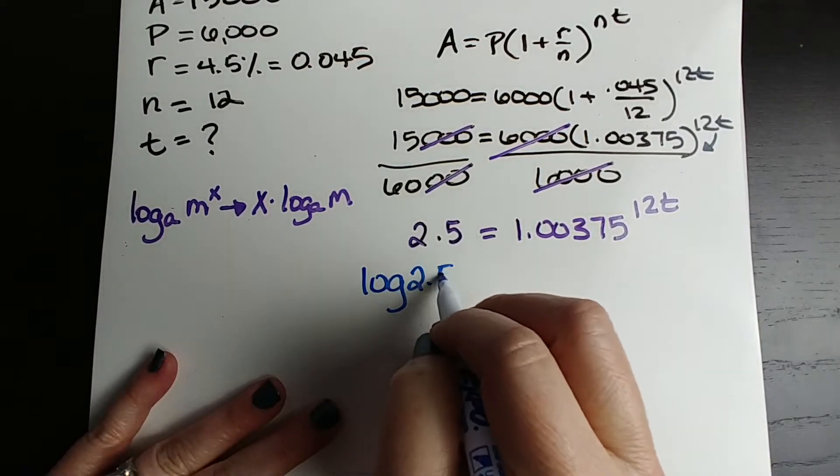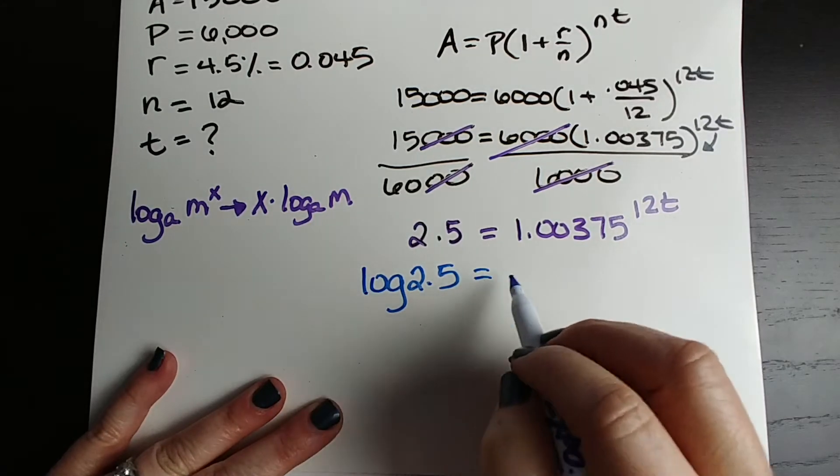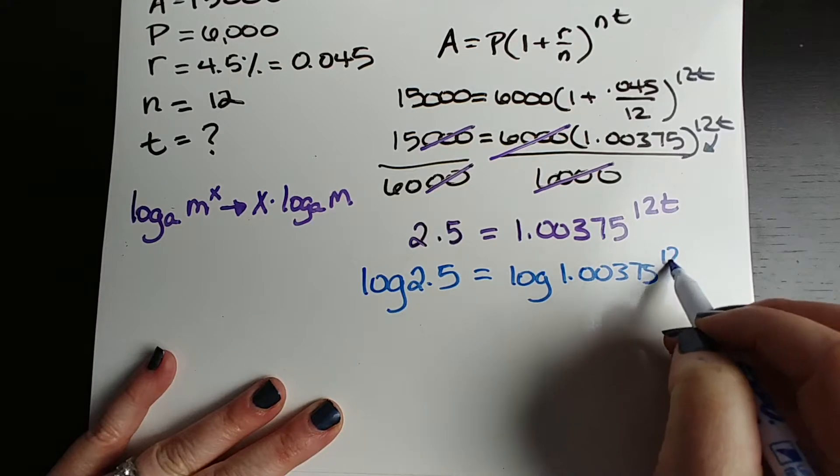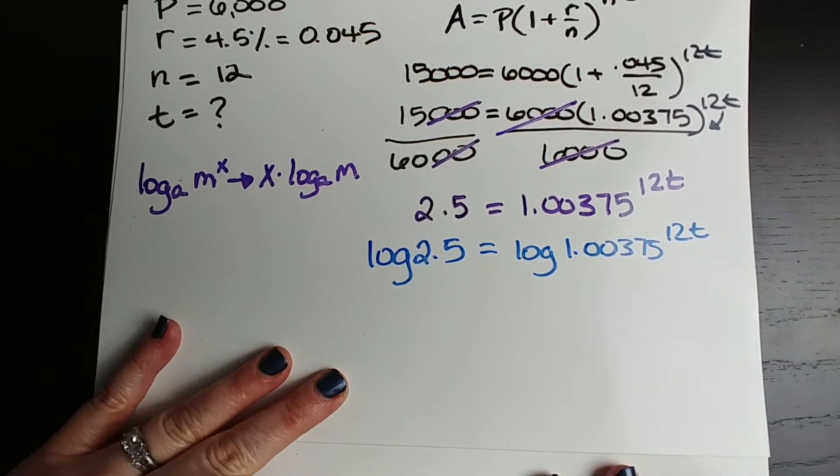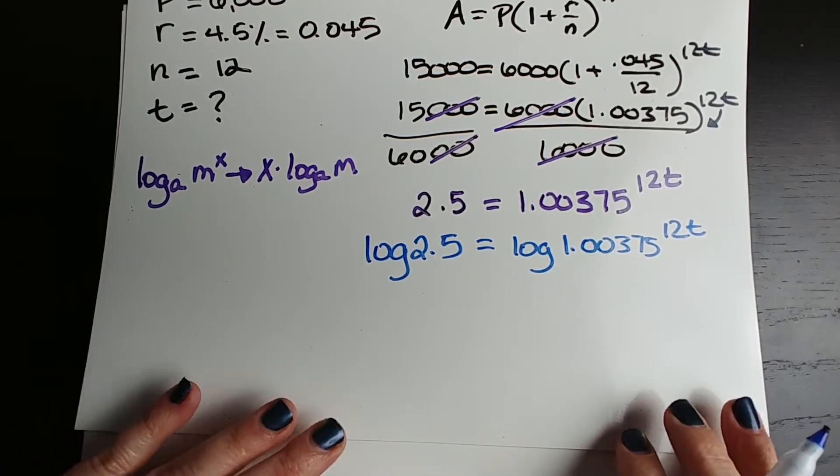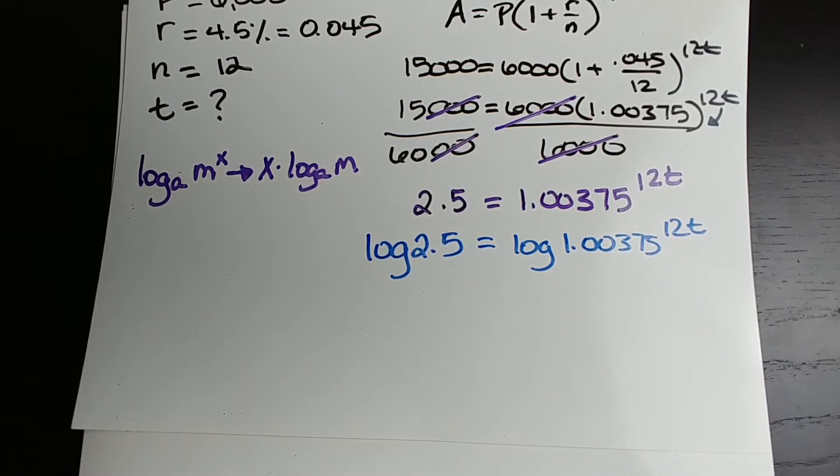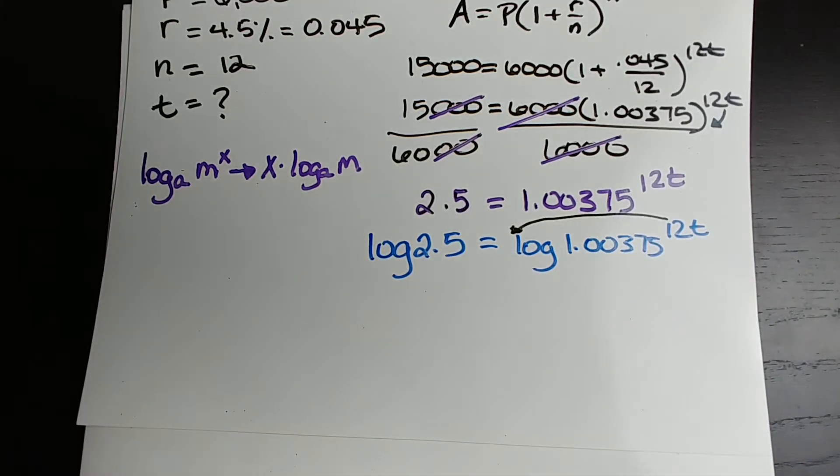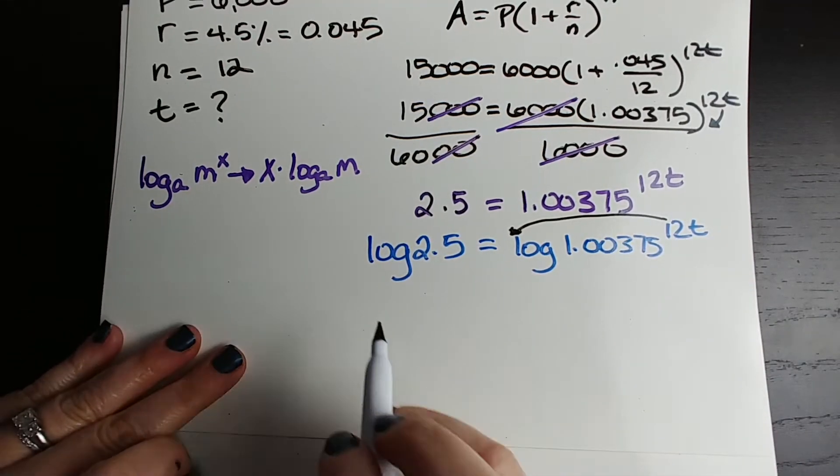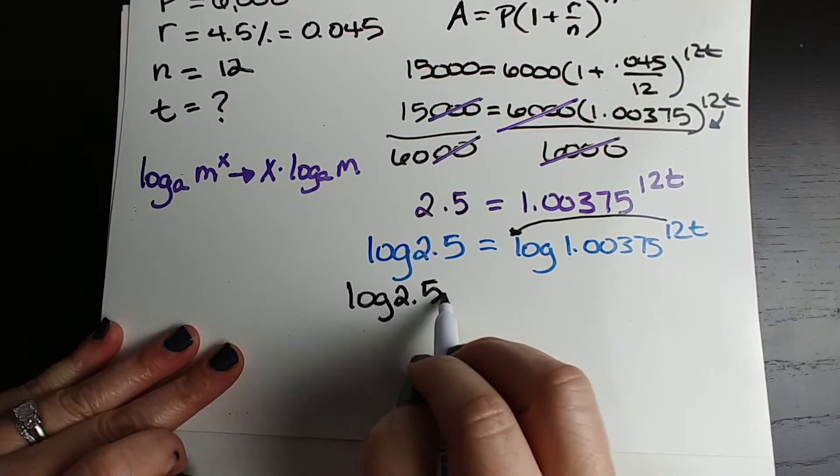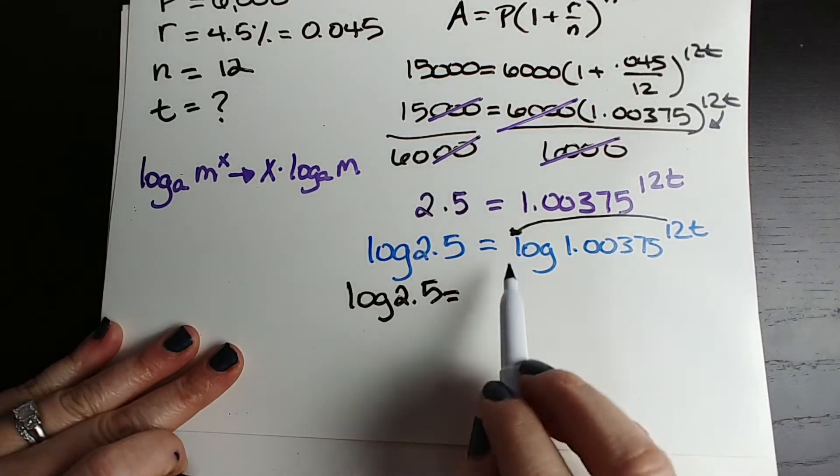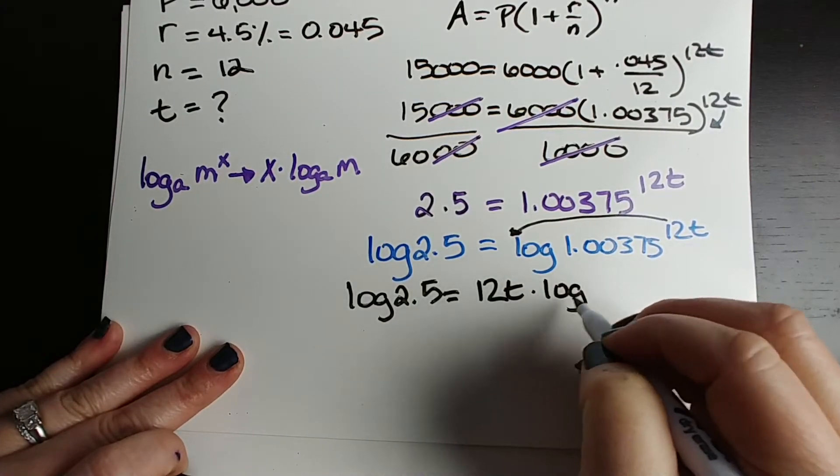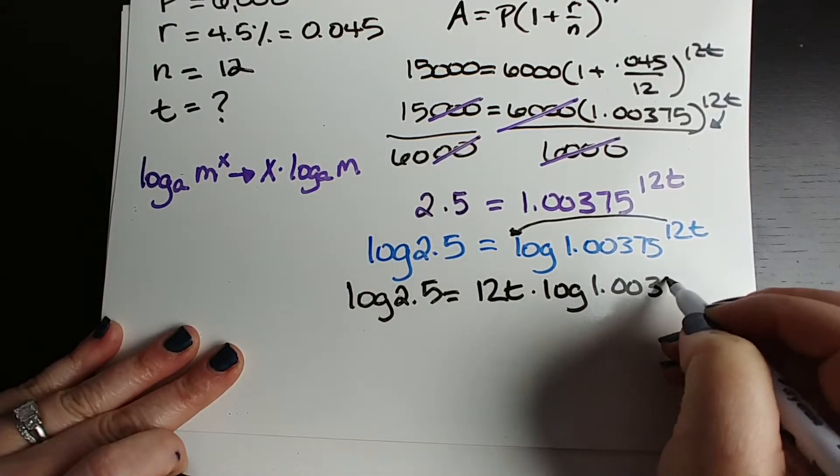So log of 2.5, multiply log to the left side, multiply log to the right side, 1.00375, still raised to the 12 T power. Now I have logs. Great. If I have logs, I can use the properties of exponents. So let's do that. Let's simply say log of 2.5. I haven't changed anything over here, but I am going to bring down this 12 T using this property. 12 T times the log of 1.00375.